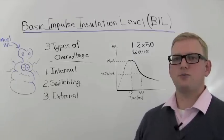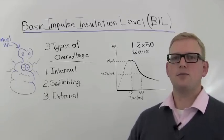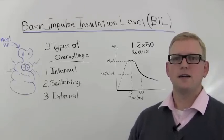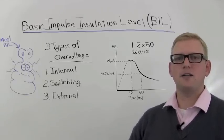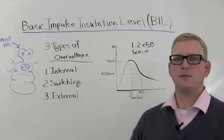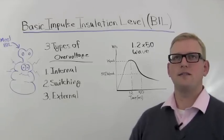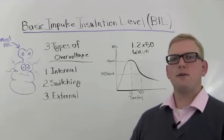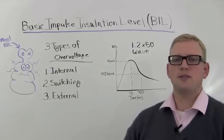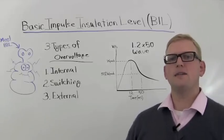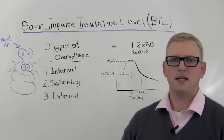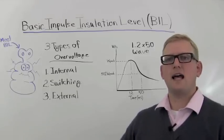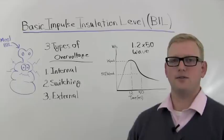Manufacturers will test their equipment and provide levels that are adequate for that voltage rating. For example, a 34.5 kilovolt rated transformer — that's the high voltage side of a typical medium voltage transformer — will have a BIL, or Basic Impulse Insulation Level rating, of 150 kilovolts. That piece of equipment will withstand a peak surge up to 150 kilovolts.